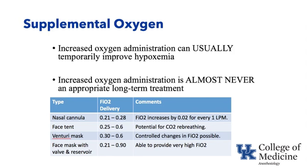A more detailed look at the management of hypoxemia starts with supplemental oxygen. Increased oxygen administration can almost always temporarily improve hypoxemia, but it's almost never an appropriate long-term treatment. There are four types of supplemental oxygen: nasal cannula (regular or high flow), a face tent, a Venturi mask, and a face mask with valve and reservoir. Each can deliver different amounts of FiO2 with specific purposes as described in this table.